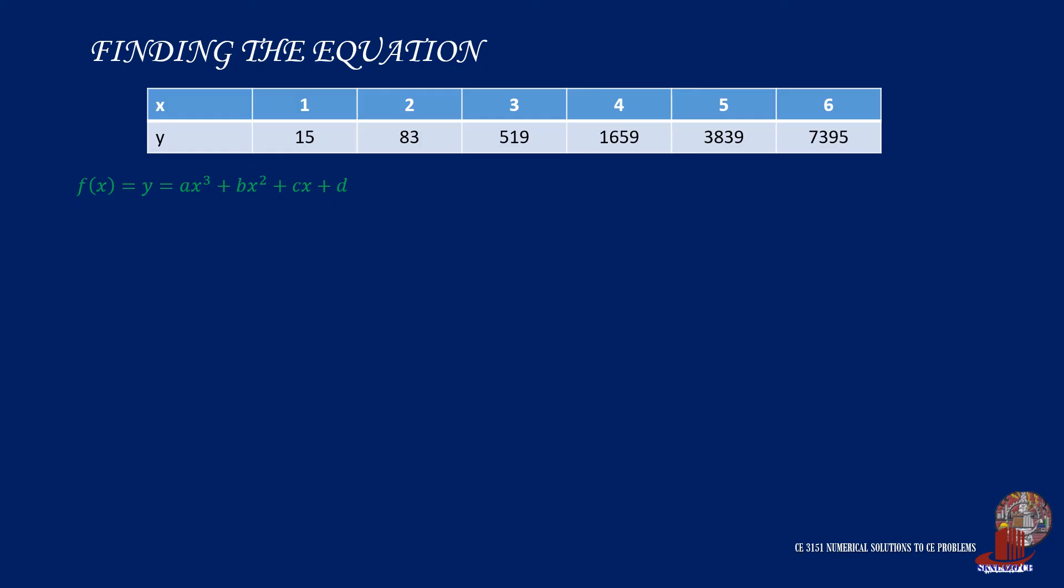Check the equations provided at delta cubed Y. 6A is equal to 336. We can readily determine A as 56. Now move to delta squared Y, which gives the equation 12A plus 2B is equal to 368. By plugging 56 as A, we can compute for B as negative 152. From delta Y, we use the simplest equation, which is 7A plus 3B plus C is equal to 68. And plugging the values of A and B, C will then be computed as 132.